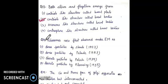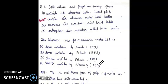Question 14: ribosomes were first observed under an electron microscope as — 1. dense particles by Claude, 1953; 2. dense particles by Palade, 1953; 3. discrete particles by Palade, 1935; 4. discrete particles by Fleming, 1935. The right answer will be second: dense particles by Palade, 1953.